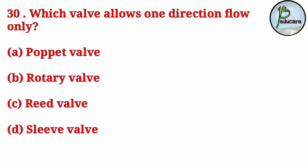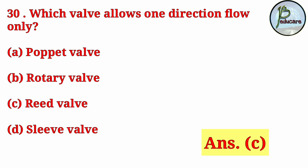Which valve allows one direction flow only? Which valve allows flow in only one direction? The correct answer is Answer C — reed valve. The reed valve allows flow in only one direction.